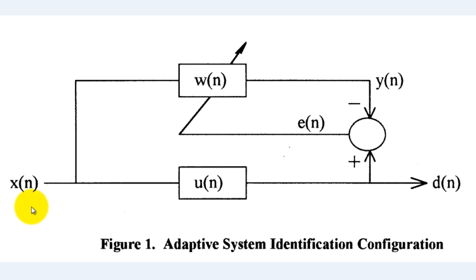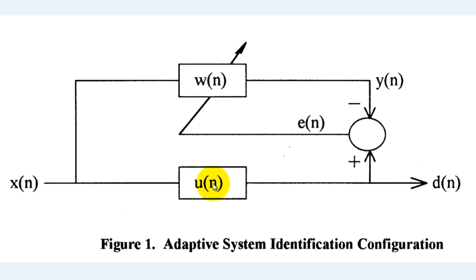We are going to create a sinusoidal signal with some noise. We will add random noise to the signal and then perform filtering using a digital FIR filter to get a desired output. For this experiment we know the transfer function of the digital filter, but in a real practical situation we may not know the filter coefficients. We will test whether the adaptive filter can recover these filter coefficients.